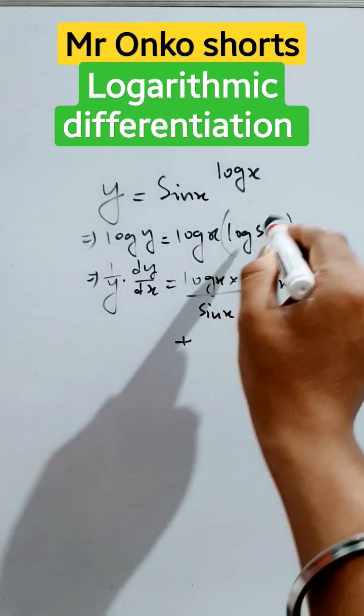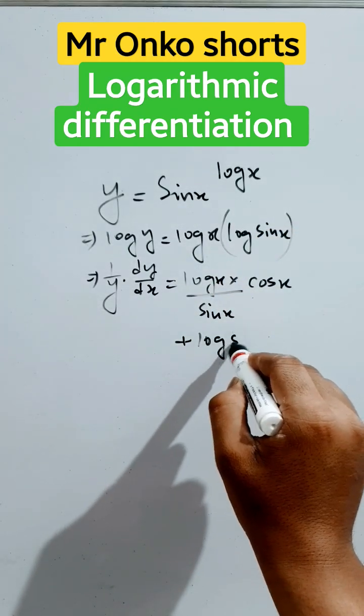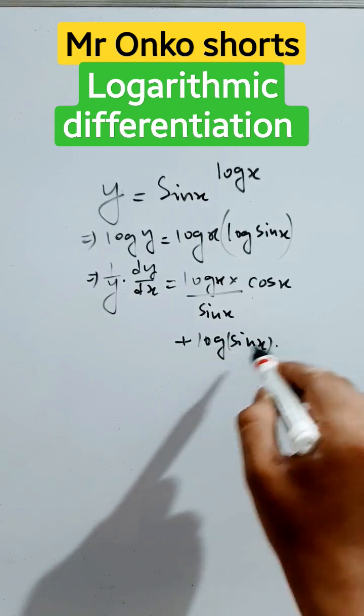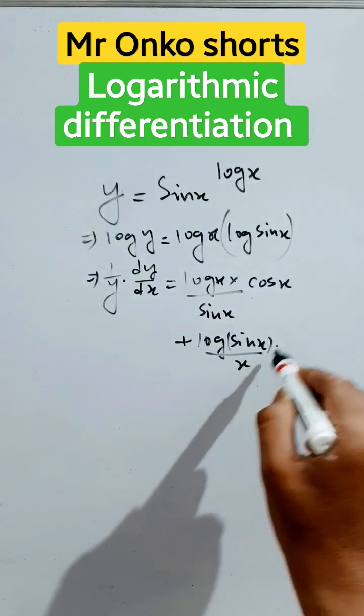Chain rule here. Now plus, v will be fixed, log of sine x, into log x derivative 1 by x.